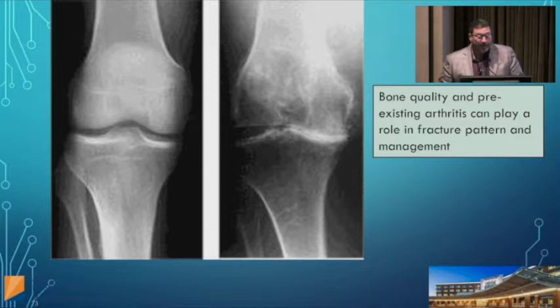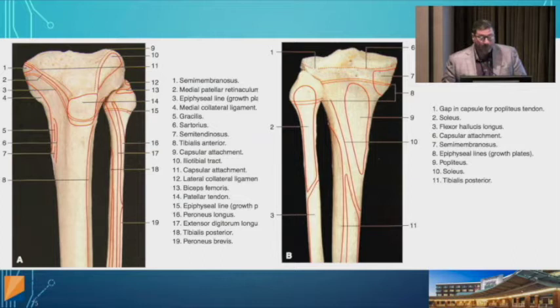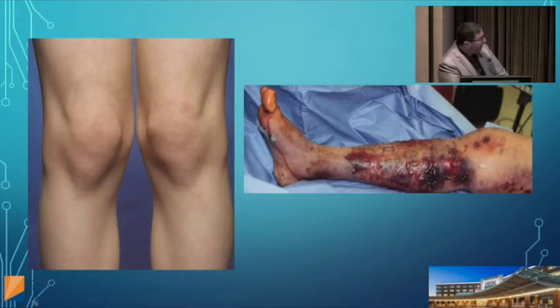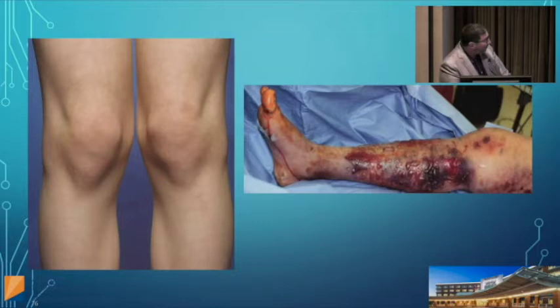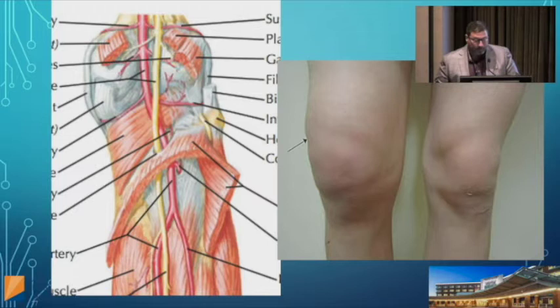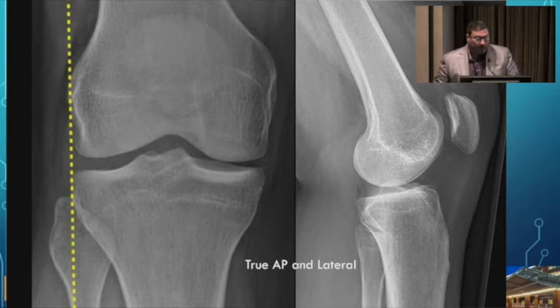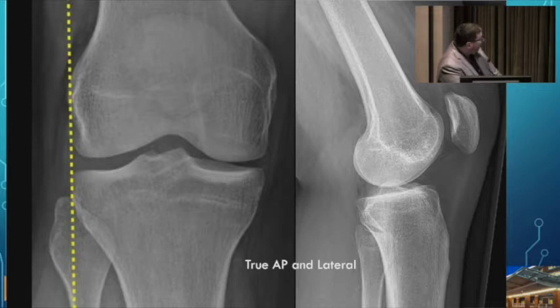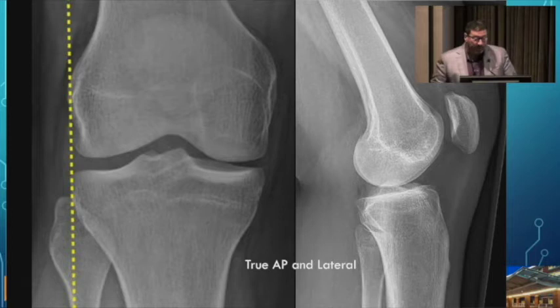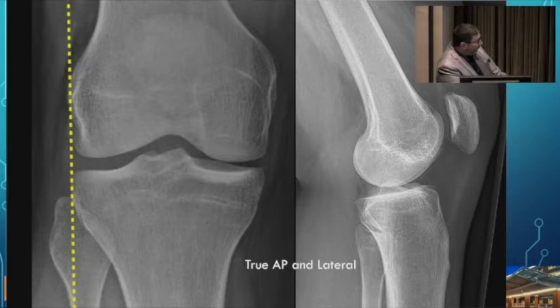Soft tissue injury is critical — one case shows a longshoreman who fell and broke his tibia out at sea; it took five days to get him back to shore, and you can see extensive soft tissue injury despite a closed fracture, delaying definitive treatment. On x-rays, the end of the femur should line up with the top of the tibia. Look at the joint line for any disruption. X-ray beam angle matters — if the beam is in the wrong plane, you may miss joint injury. Oblique views provide additional information on the plateau.